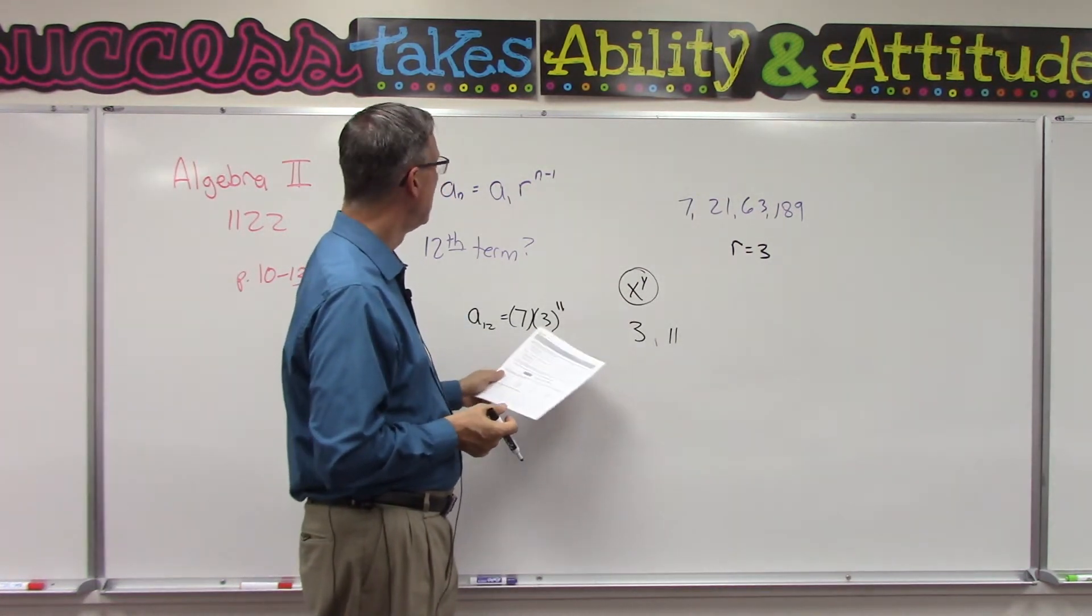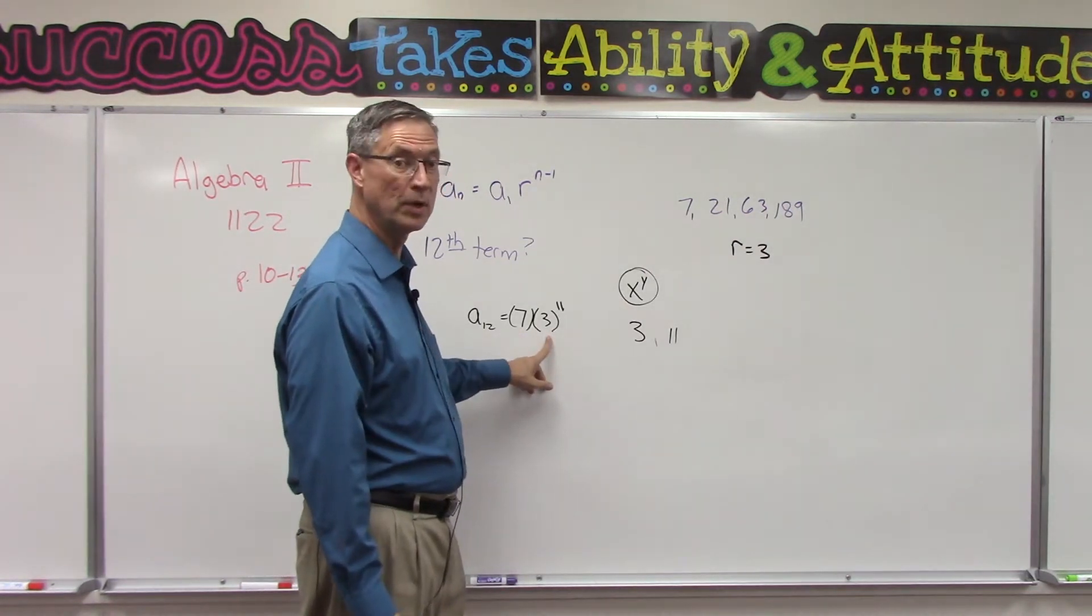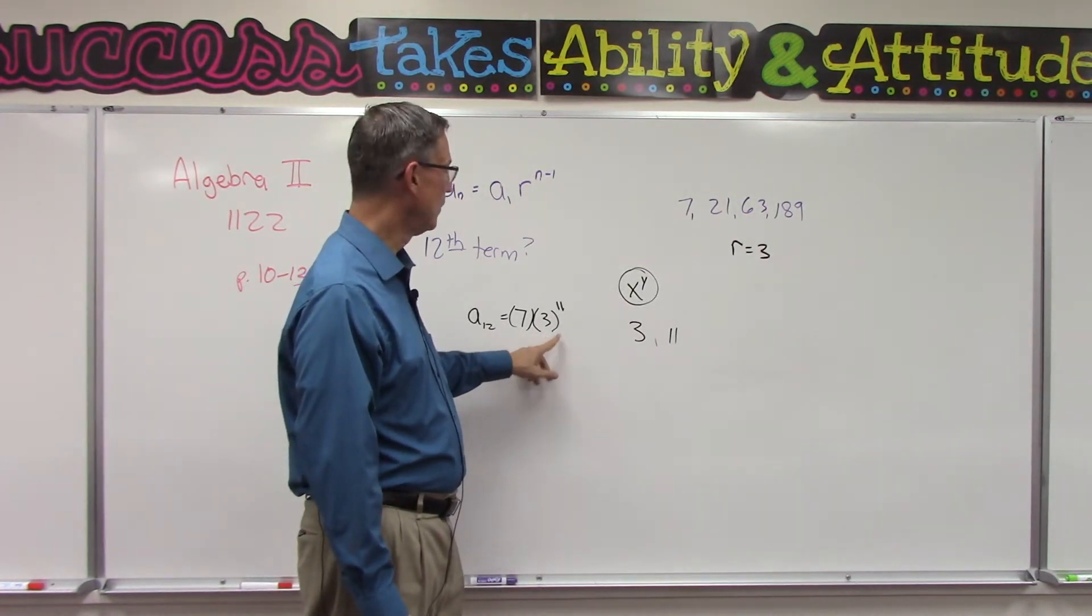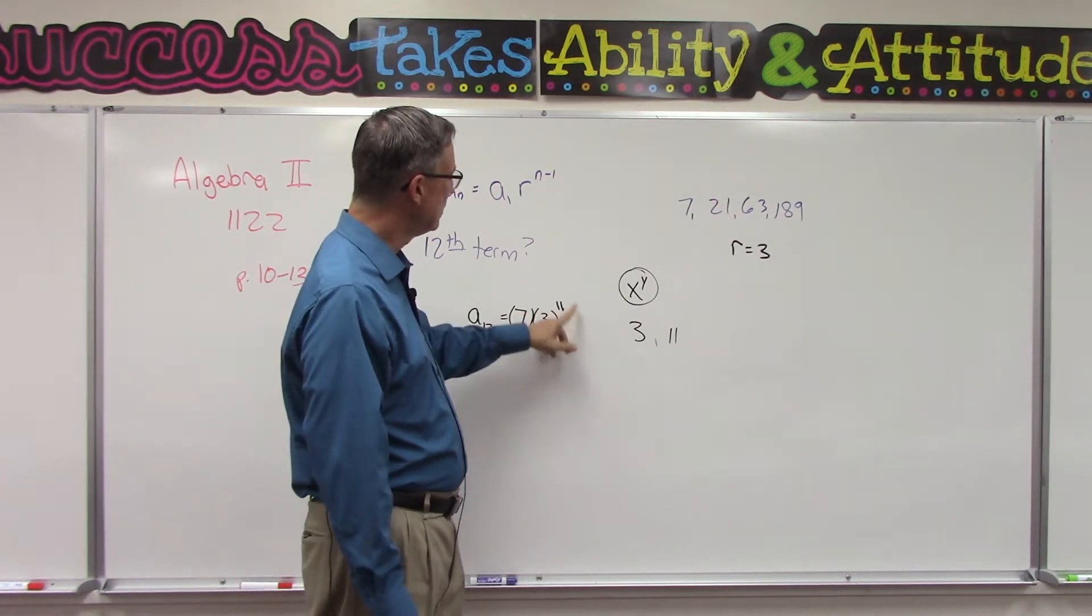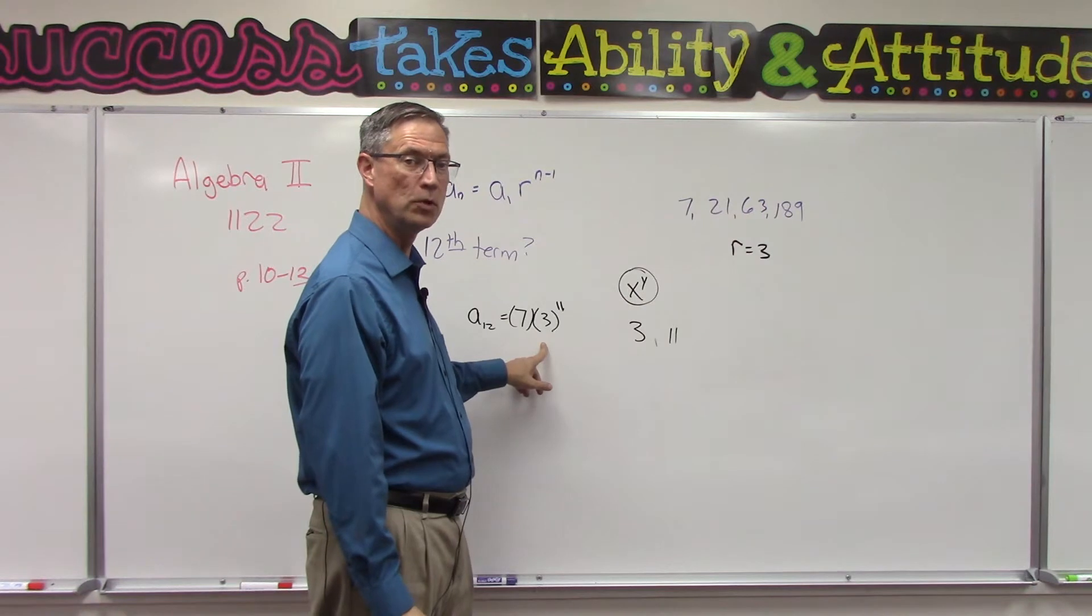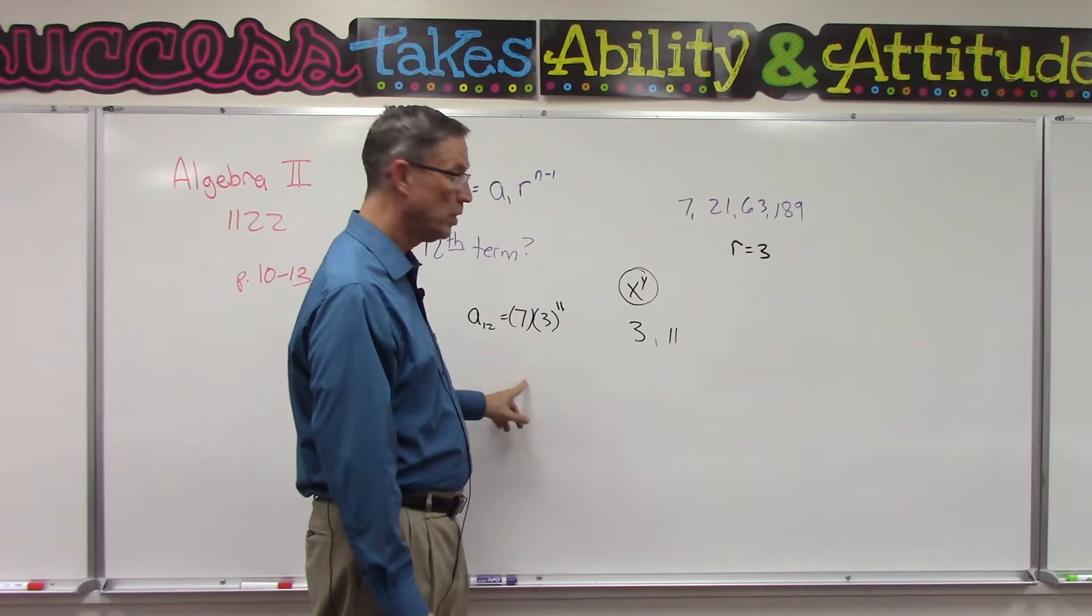Take that number and multiply that times 7. Do not first multiply 7 times 3 and get 21, and then take the 21 to the 11th power—you'll definitely get the wrong answer. So we always do the exponents first, and again, this is reviewing that order of operations: exponents first, then do the multiplication, and you'll get a big number.